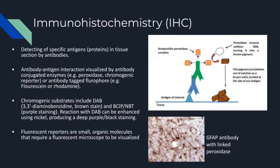Immunohistochemistry, abbreviated as IHC, is a commonly used method of immunostaining. IHC is used to detect and localize specific antigens in a tissue sample, with the use of antibodies that will bind to a particular antigen of interest. This antibody-antigen interaction is visualized by antibody-conjugated enzymes. One commonly used enzyme is peroxidase. In the case where you have a peroxidase-conjugated antibody, a chromogenic substrate is used for visualization. Commonly used chromogenic substrates include DAB and BCIP-NBT.